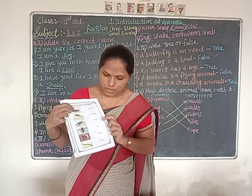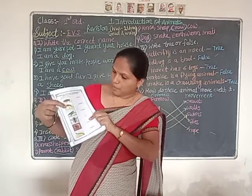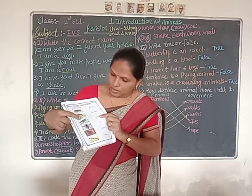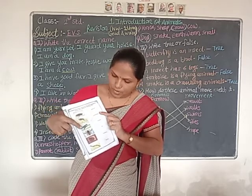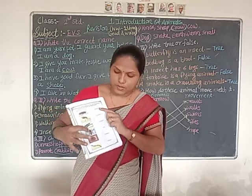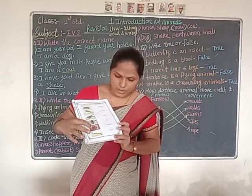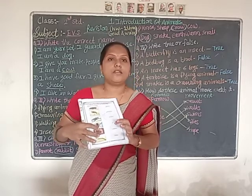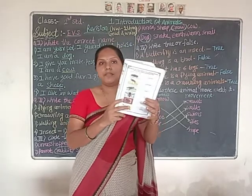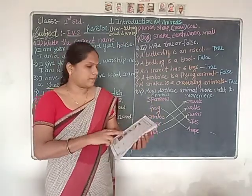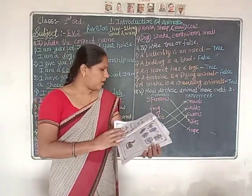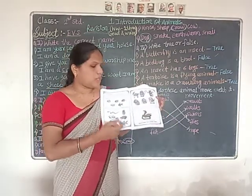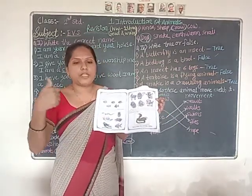Which one is cockroach? Here is the cockroach. Next one — mosquito. Third one — grasshopper. Second one — this is a honeybee. First one — ladybird. Ants are also there. You have to match all of them with lines using a pencil.